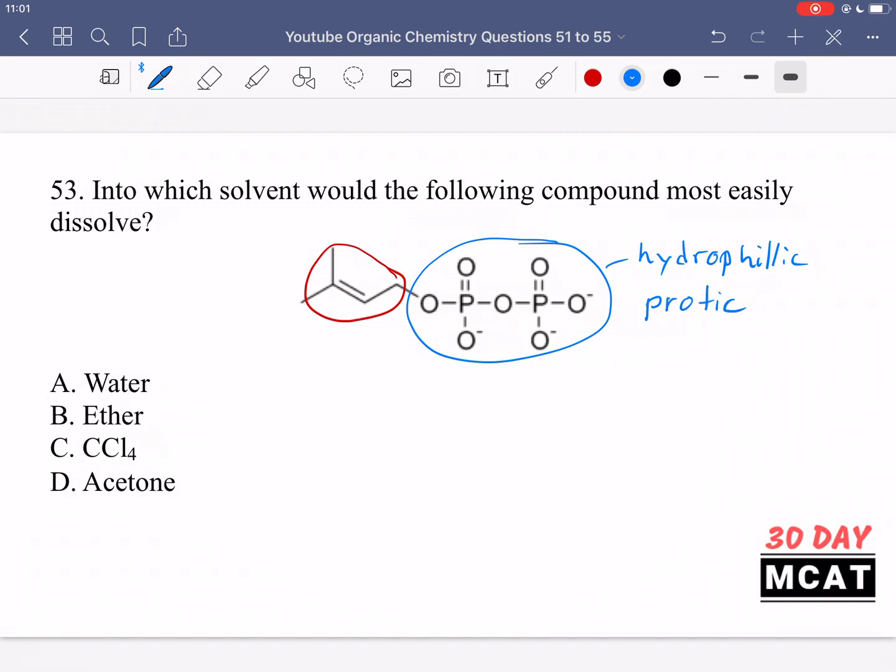Those oxygens at the bottom can gain and lose protons. When they lose protons, they're charged. That actually would make them very good for dissolving in water. So option A is correct. Even though we have some hydrophobic part, the effect of the hydrophilic part is much more pronounced, especially since we have negative charges. We have a charged species, which makes water the best option.